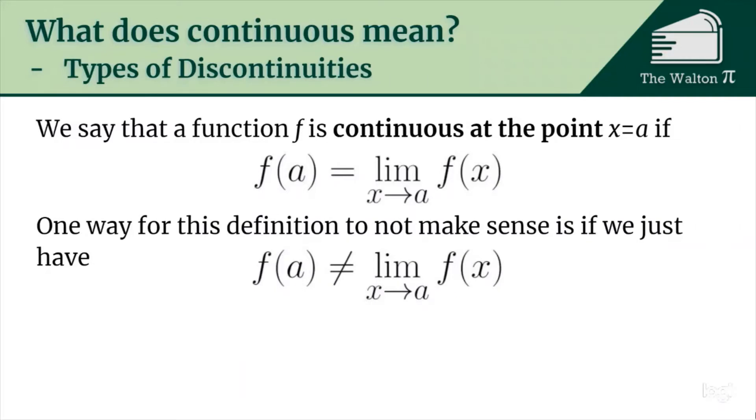So one way for the function to be discontinuous is if we just say that f(a) is not equal to the limit as x approaches a of f(x). Now that implies that the limit exists but that the value of the function is somehow different than that, and these are called removable discontinuities.